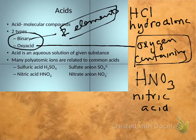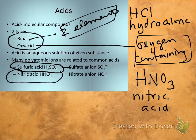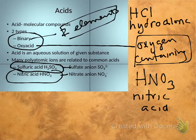If you look at your ion reference sheet and you look at the polyatomic ions, a lot of those oxyanions have an associated acid. So for sulfuric acid, what is the associated oxyanion? Sulfate. For nitric acid, the associated oxyanion is the nitrate ion.